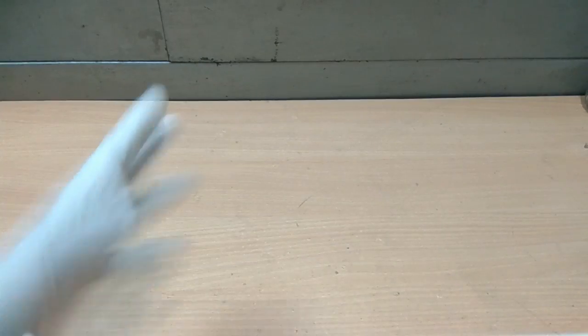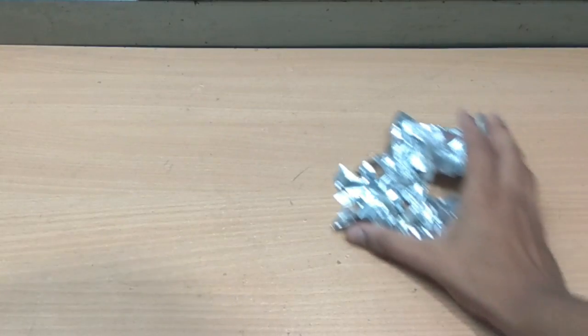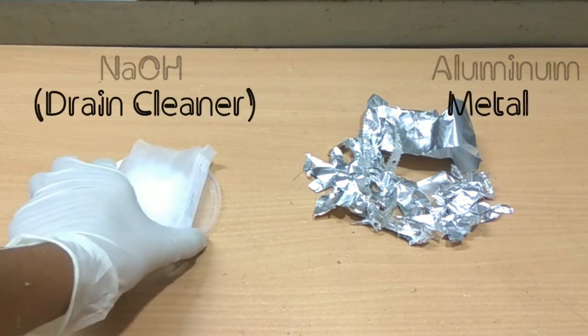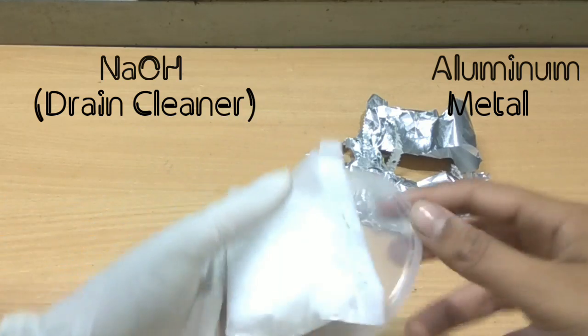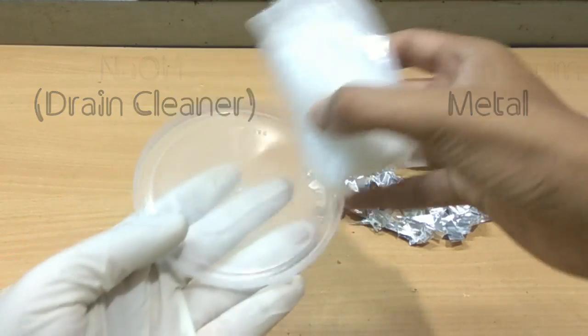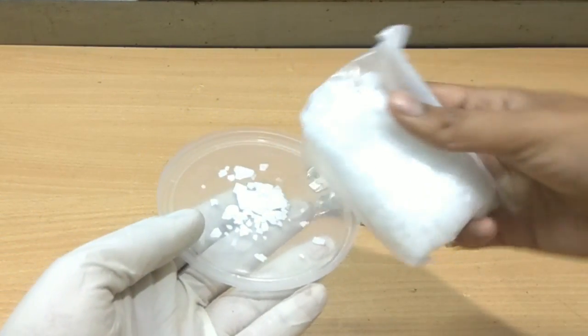Hey guys, before starting the experiment we should wear gloves. We need some aluminum scrap and some caustic soda, which is used as drain cleaner at home. Caustic soda is the crystal flakes of sodium hydroxide.